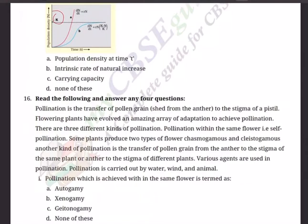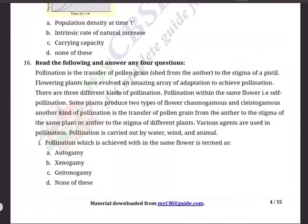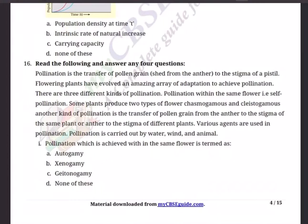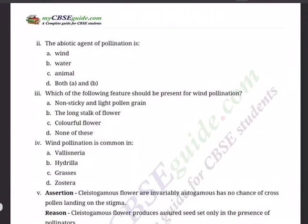Question 16, also 4 marks. Read the following and answer any 4 questions. Pollination is the transfer of pollen grain from the anther to the stigma of the pistil. Flowering plants have evolved amazing adaptations to achieve pollination. There are three kinds: pollination within the same flower (self-pollination), some plants produce chasmogamous and cleistogamous flowers, and transfer from anther to stigma of same or different plants. Sub-question 1: Pollination achieved within the same flower is termed? Options: A) Autogamy, B) Xenogamy, C) Geitonogamy, D) None of these.